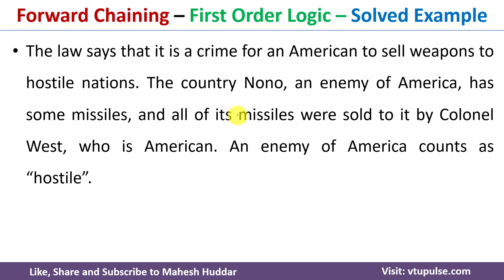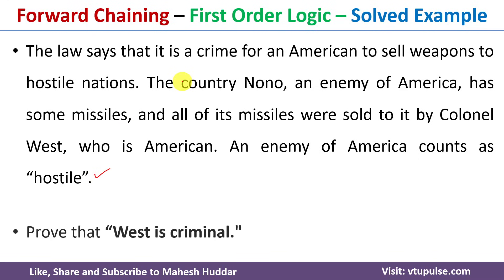This is the example I will be considering. The law says that it is a crime for an American to sell weapons to hostile nations. The country Nono, an enemy of America, has some missiles, and all of its missiles were sold to it by Colonel West, who is an American. An enemy of America counts as hostile in this case. Given this problem definition, we need to prove West is a criminal using the forward chaining technique.